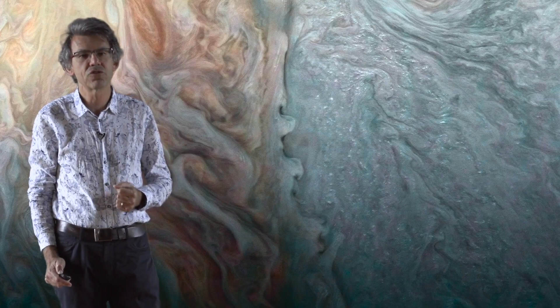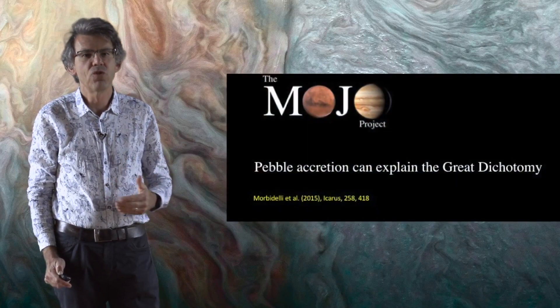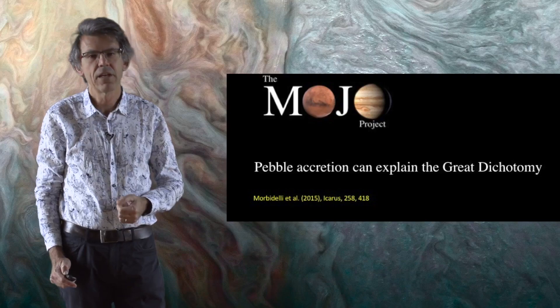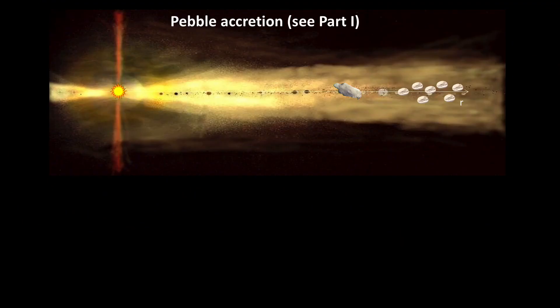So one of the major contributions of Mojo has been to show that pebble accretion can explain the great dichotomy. So remember from part one that planetesimals keep growing by accreting drifting pebbles, and in this way they can become protoplanets, planetary embryos, or protoplanetary cores.